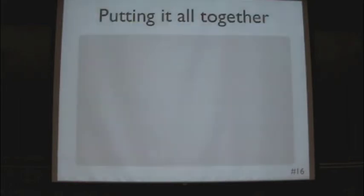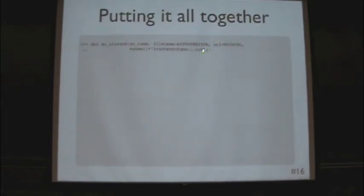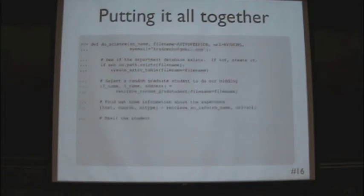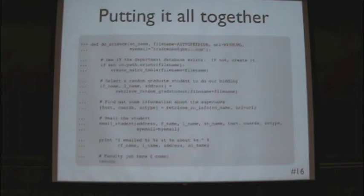So that's the basic three things. Putting it all together: we can write a routine called doScience. It takes one required argument — the name of the object we want to look at — and the database filename, the URL where the additional information is, and the email address, all as keyword arguments. We want to see if this database exists; if not, create it. Select the random graduate student to do our bidding, find out the additional information from the website, and send the email. Faculty job — here we come.